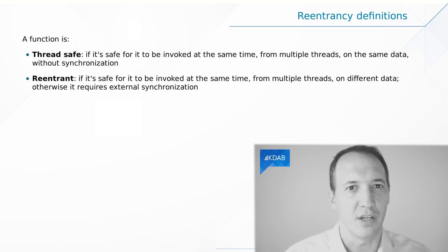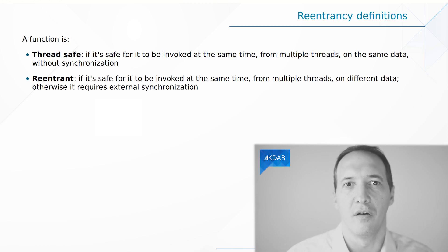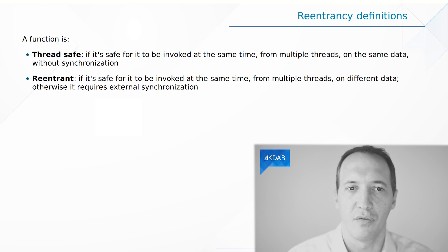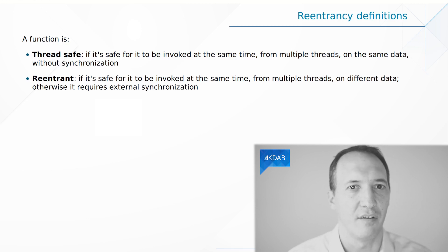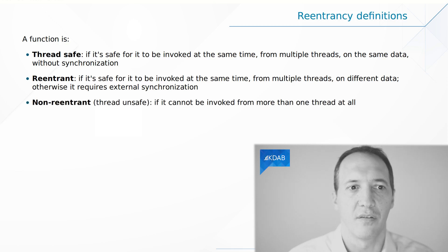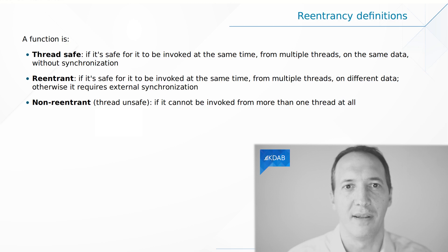A function is reentrant if we can call it from different threads on different instances of the data. This is the case for most functions as long as they don't have any kind of internal static data. Non-reentrant means you cannot call this function from more than one thread at all.